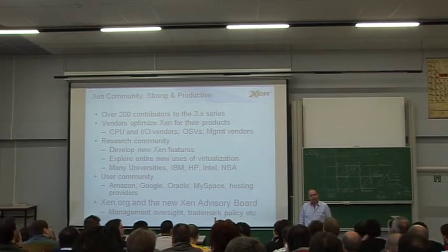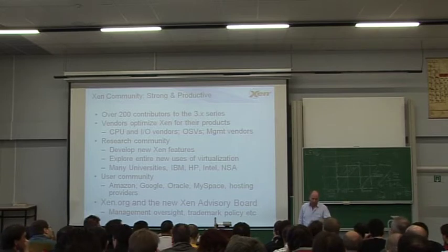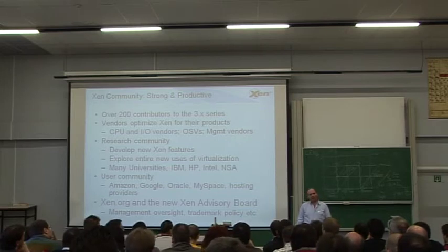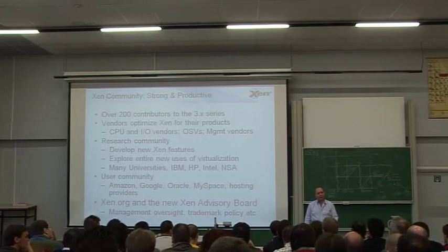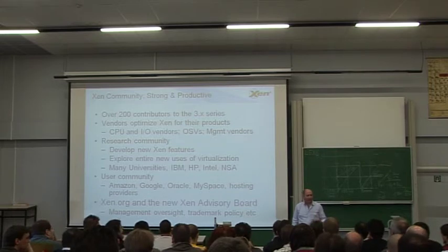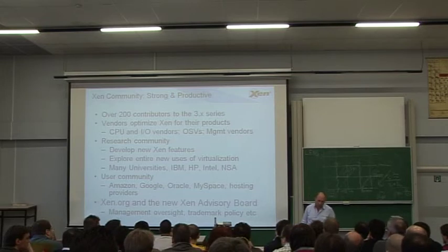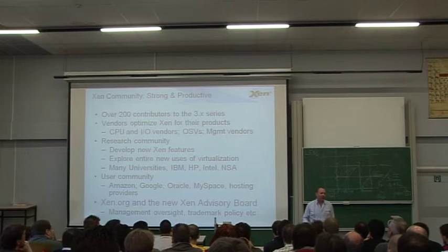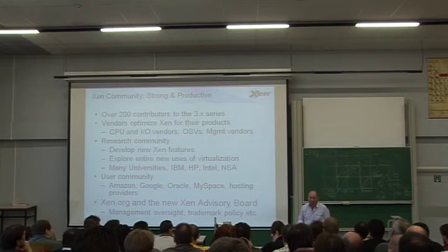The research community is very important for Xen. We have people developing new features, but particularly cool is that researchers are coming up with whole new use cases for virtualization — such as using virtualization to enable mobility of virtual machines between servers and clients. Many universities and corporate research labs including IBM, HP, Intel, and even the NSA have submitted code to Xen, including substantial patches adding various security frameworks.